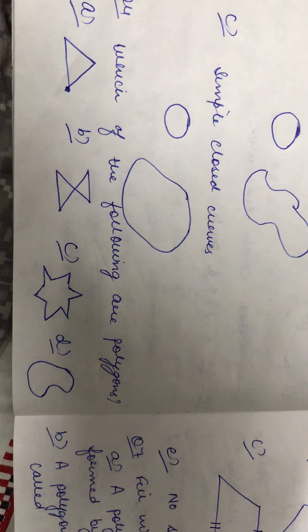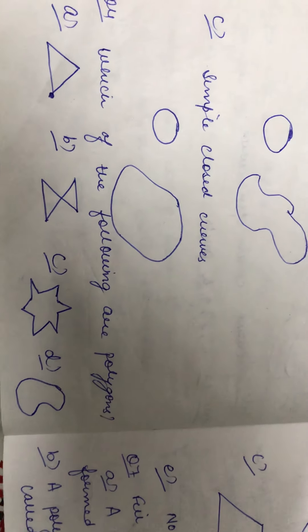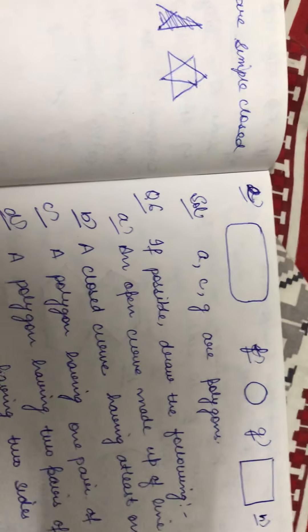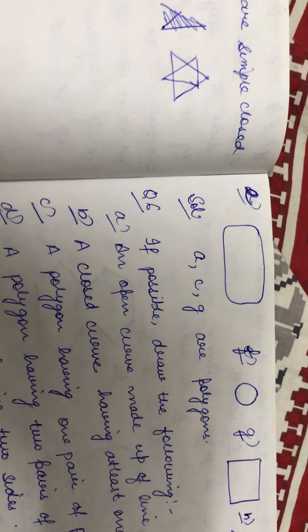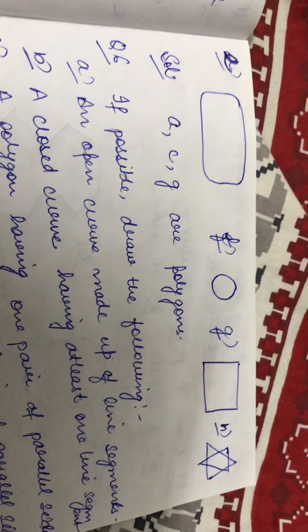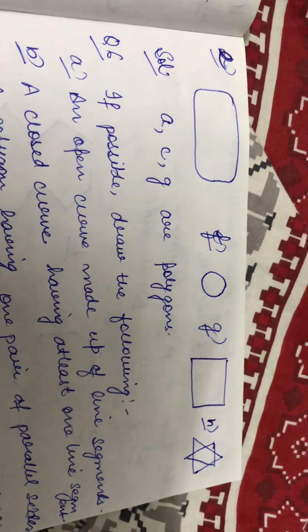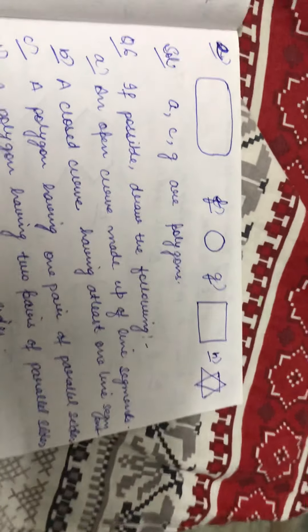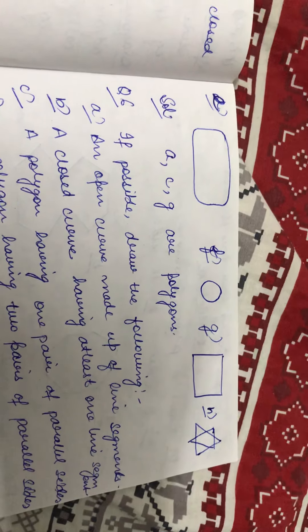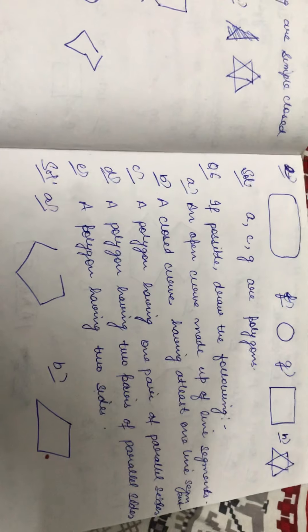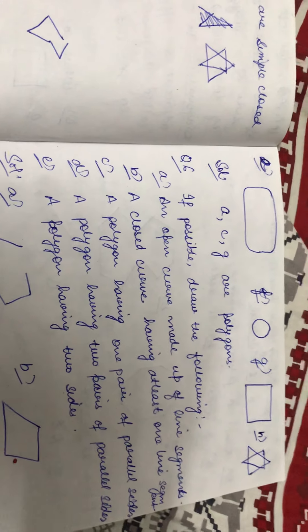In the D part it is not made up of line segments, so it is not a polygon. In the E part there are curves on the corners, so these are not straight line segments — E part is not a polygon. In the F part it is a circle, not made up of line segments, so it is not a polygon. G part has line segments with the same initial and final points, so yes it is a polygon. In the H part it is intersecting, so it is not a polygon. So from these, A, C and G parts are the polygons.